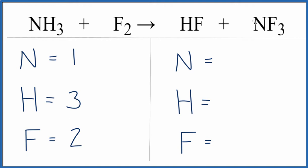Over on the products, we have the one nitrogen, we have one hydrogen, and then we have the one fluorine here plus these three fluorines right here for a total of four fluorine atoms.